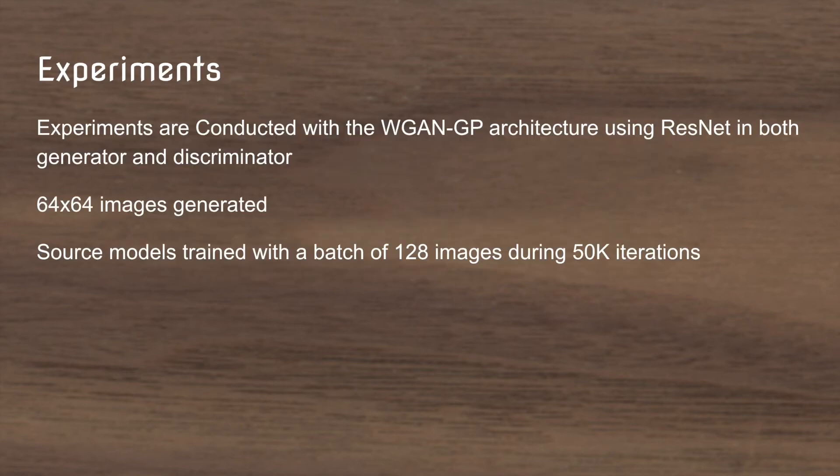Their experiments use the improved Wasserstein GAN model which has ResNet layers in both the generator and the discriminator. They target 64 by 64 images and they train with a batch of 128 images for 50k iterations.